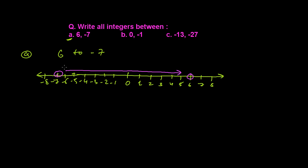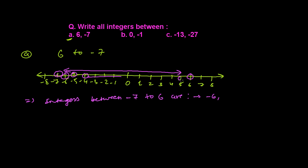All the integers between minus 7 and 6 are these ones. Integers between minus 7 to 6 are: minus 6, minus 5, minus 4, minus 3, minus 2, minus 1, 0, 1, 2, 3, 4, 5. These are the integers between 6 and minus 7.